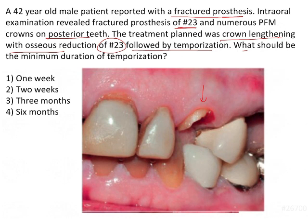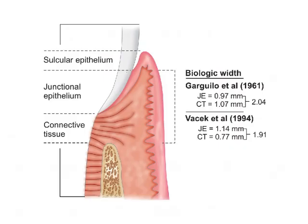What should be the minimum duration of temporization? The options are one week, two weeks, three months, and six months. What is being asked in the question is very technical. Let us try to understand the concept of biologic width first.